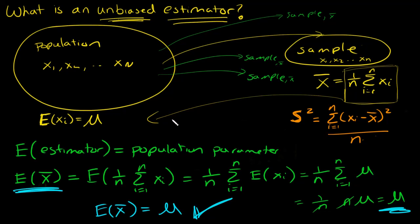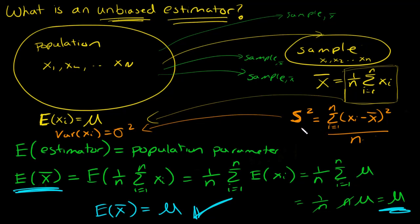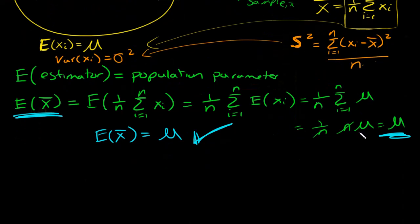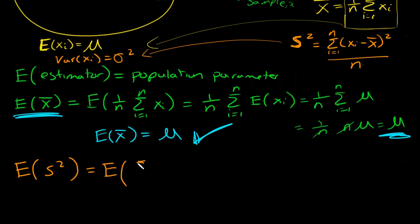We want it to be an unbiased estimator of sigma squared, the population variance, where sigma squared is the variance of x sub i. To check, we ask: what is the expected value of s-squared, where s-squared is defined as the sum from i equals 1 to n of x sub i minus x-bar squared divided by n?